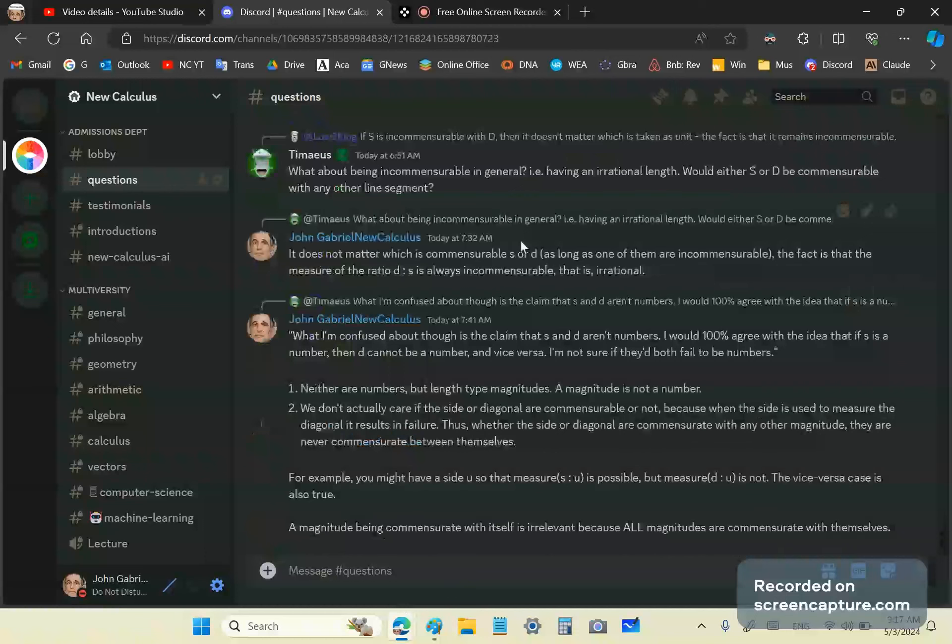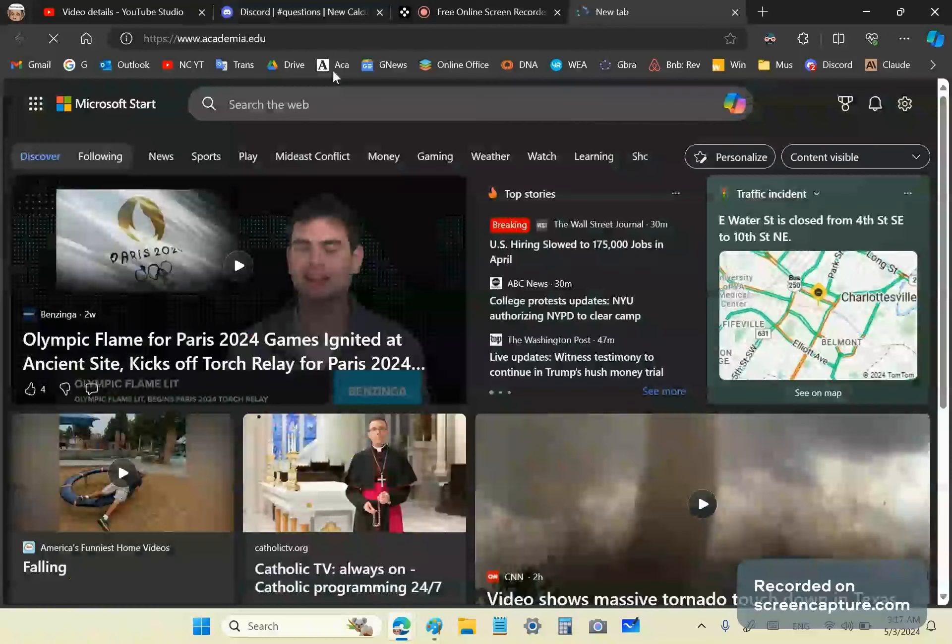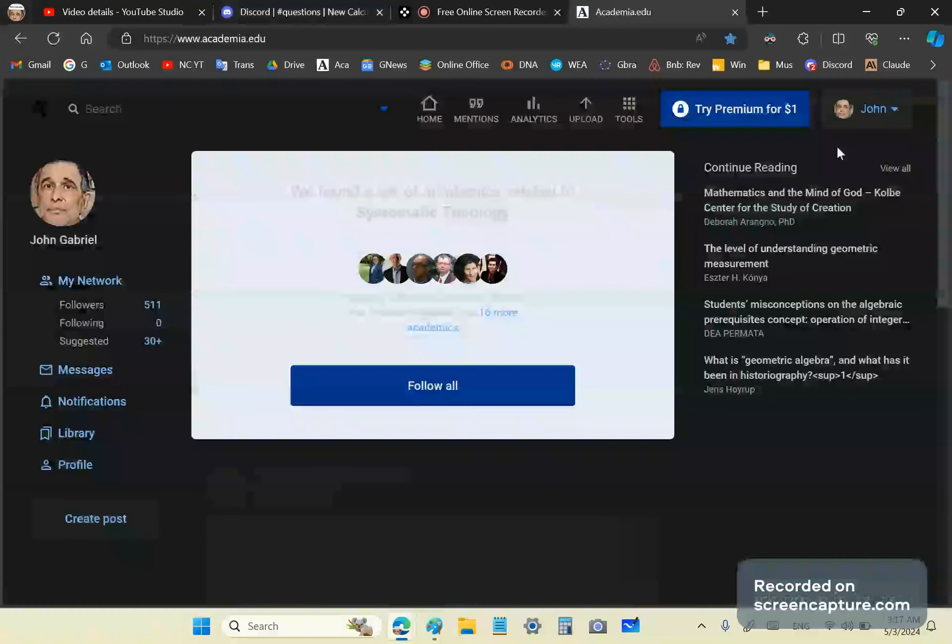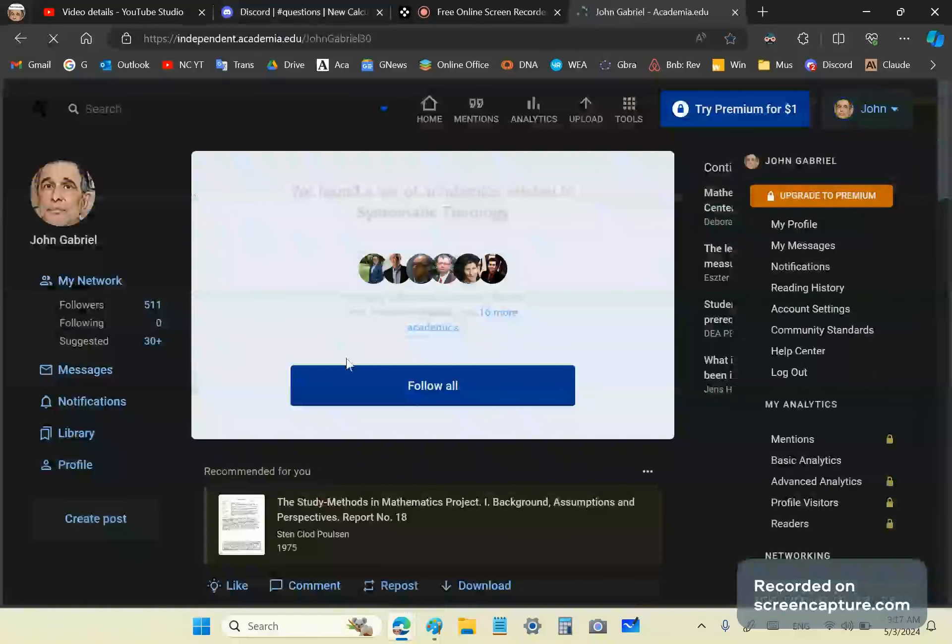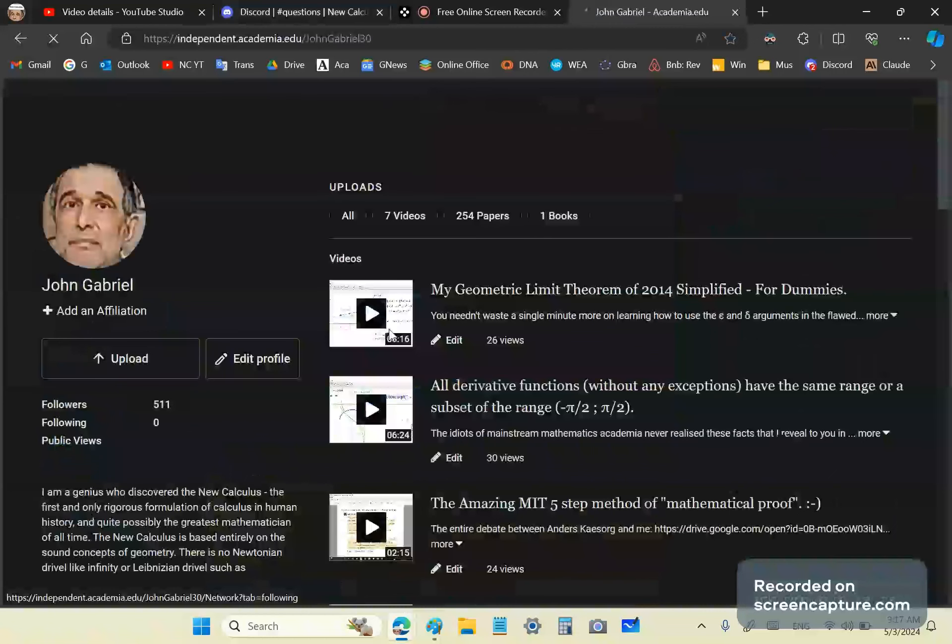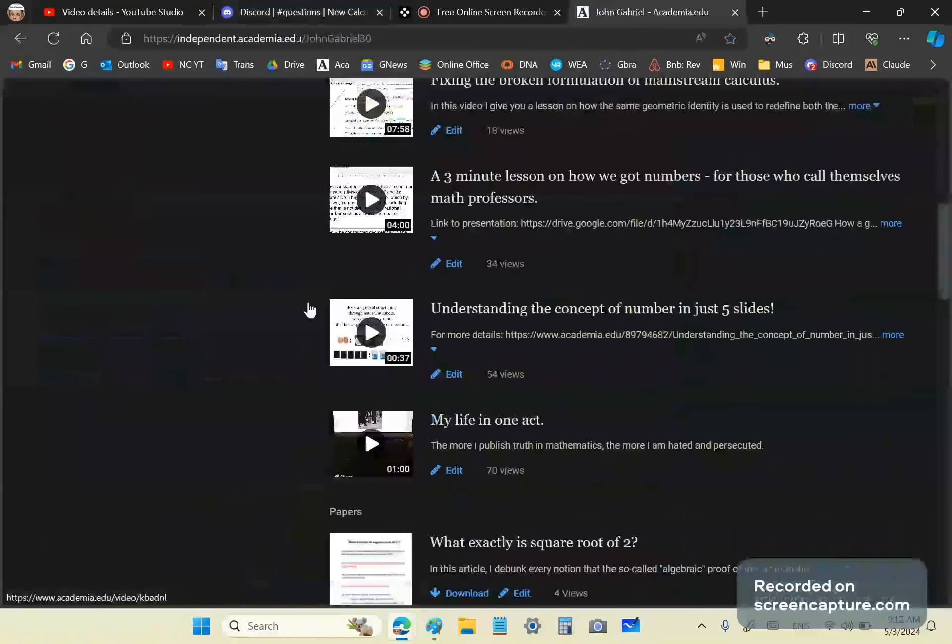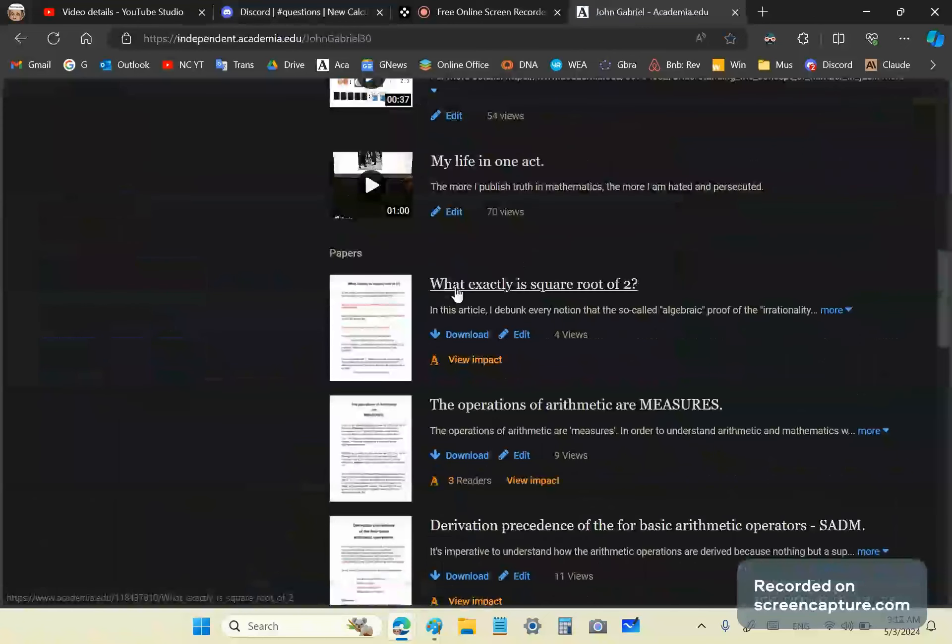And finally, become a member, become a follower on Academia. This is the Academia channel. You'll find on this channel many useful articles. So there's one book - actually there are three books, but the others are listed as articles. So seven videos, 234 papers, and one book. And if you become a follower, you'll get a notification every time I write a new article, which, by the way, I do better than anybody else. So you'll learn a lot more from me than you'll learn from your idiot professors in the mainstream or your mathematics teachers.